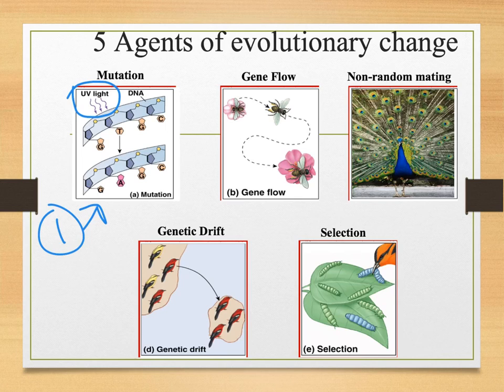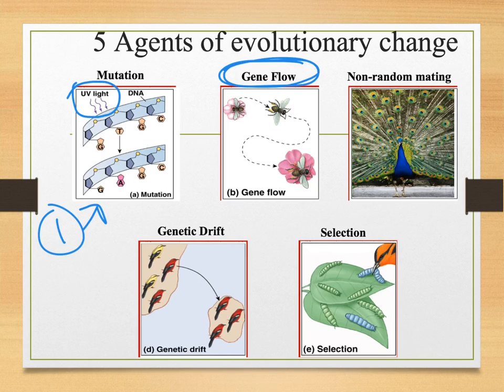The second agent is gene flow — the movement of genes. For example, pollination: pollen contains sperm cells, so those sperm cells are moving around. That gene flow — the movement of sperm and egg cells which contain DNA — can then alter populations.